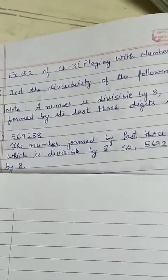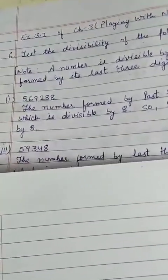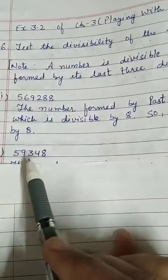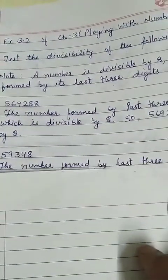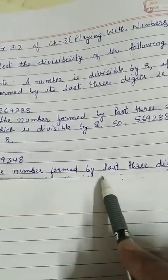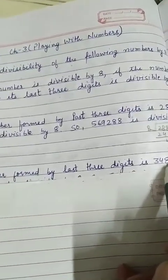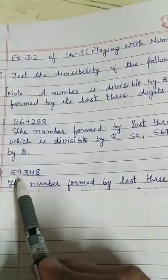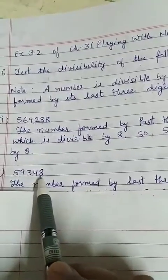Now, let's do one more part, third part. The number is given to you, 59,348. The number formed by the last three digits is 348. See that, last three digits, 348.